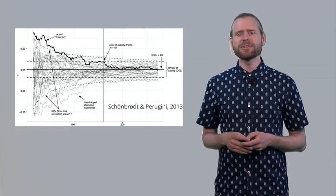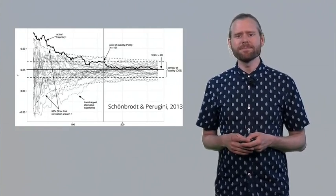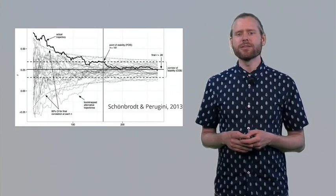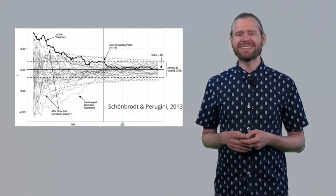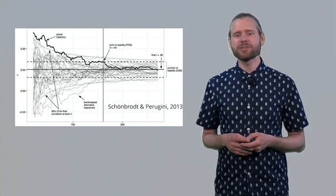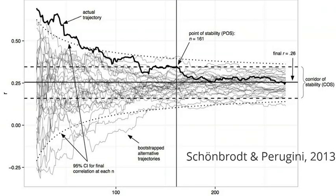This is a nice visualization by Schönbrodt and Perugini, who show how the variation in data decreases as the sample size becomes larger. From the left to the right, we see a continuously increasing sample size. We also see a black line. In this case, the black line is actually the effect size estimate from a study they performed, as they collected more and more data. So the effect size was calculated after every participant, and it is plotted here as a black line.